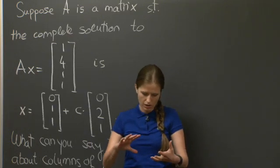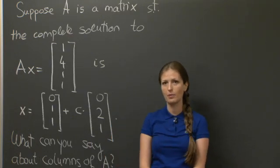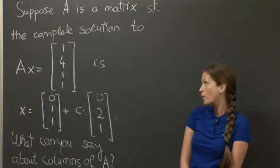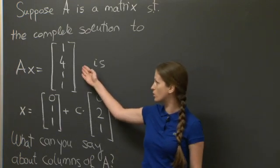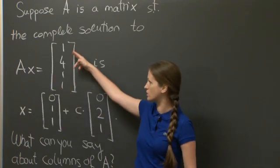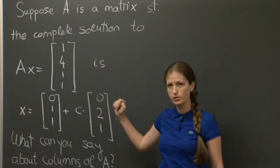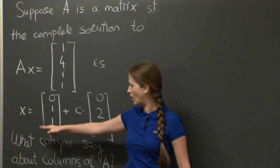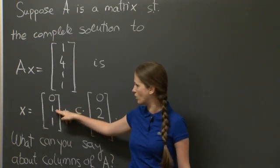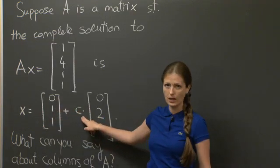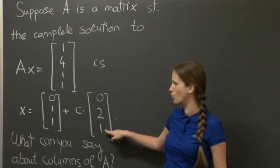The problem puts the usual solve the following system upside down by saying we have some matrix, and we know that all the solutions to Ax equals this vector here, 1, 4, 1, 1. All the solutions to this problem are given by x equals 0, 1, 1, plus any number c times 0, 2, 1.